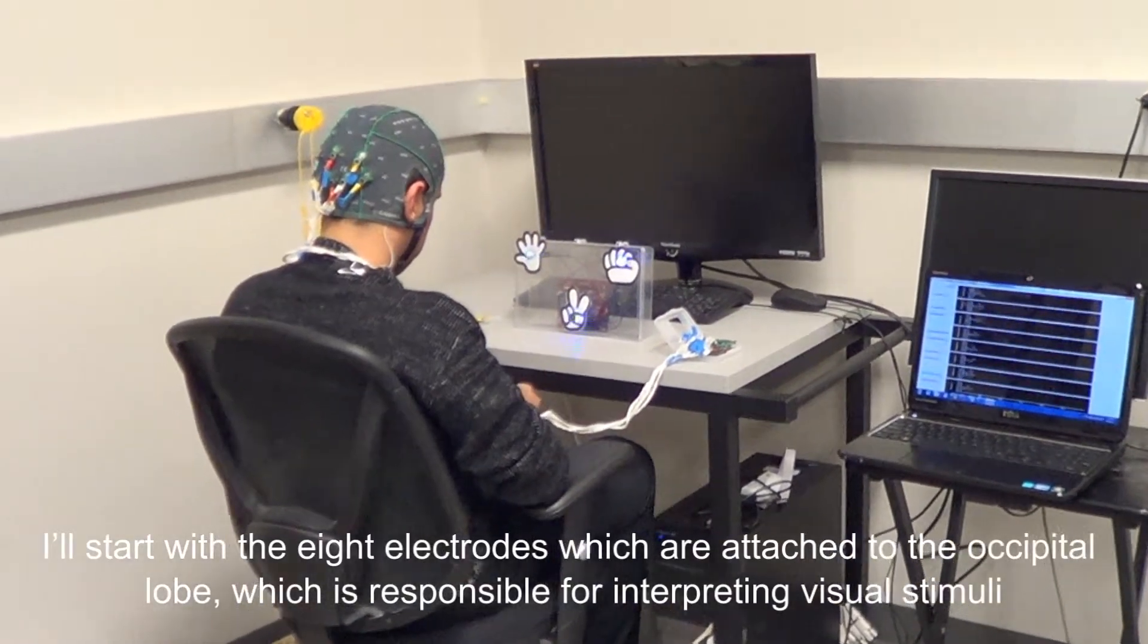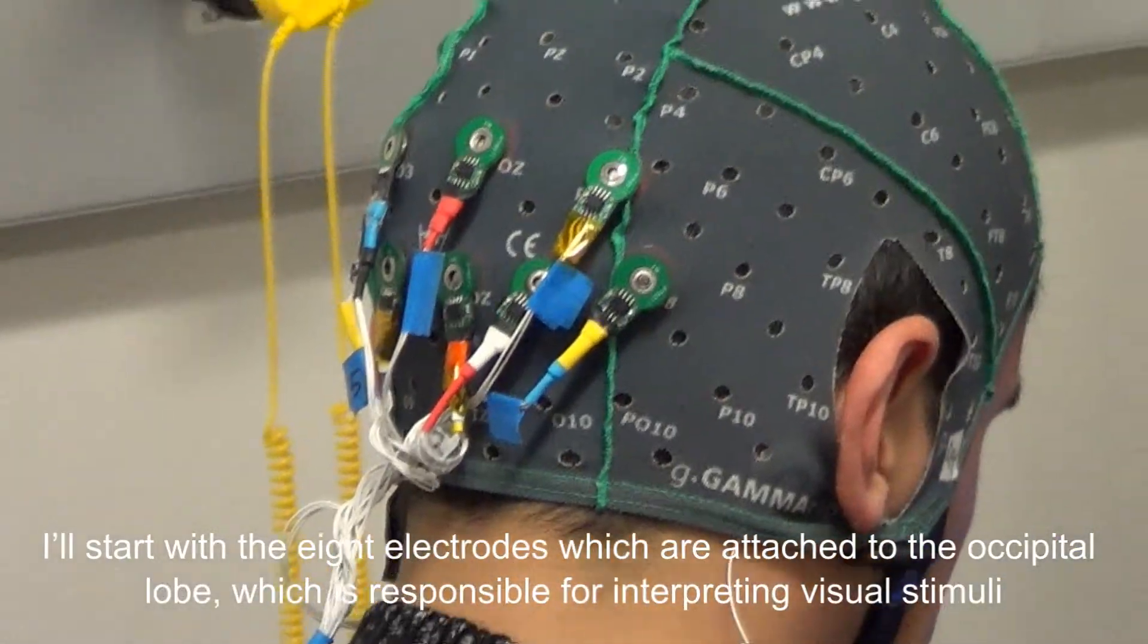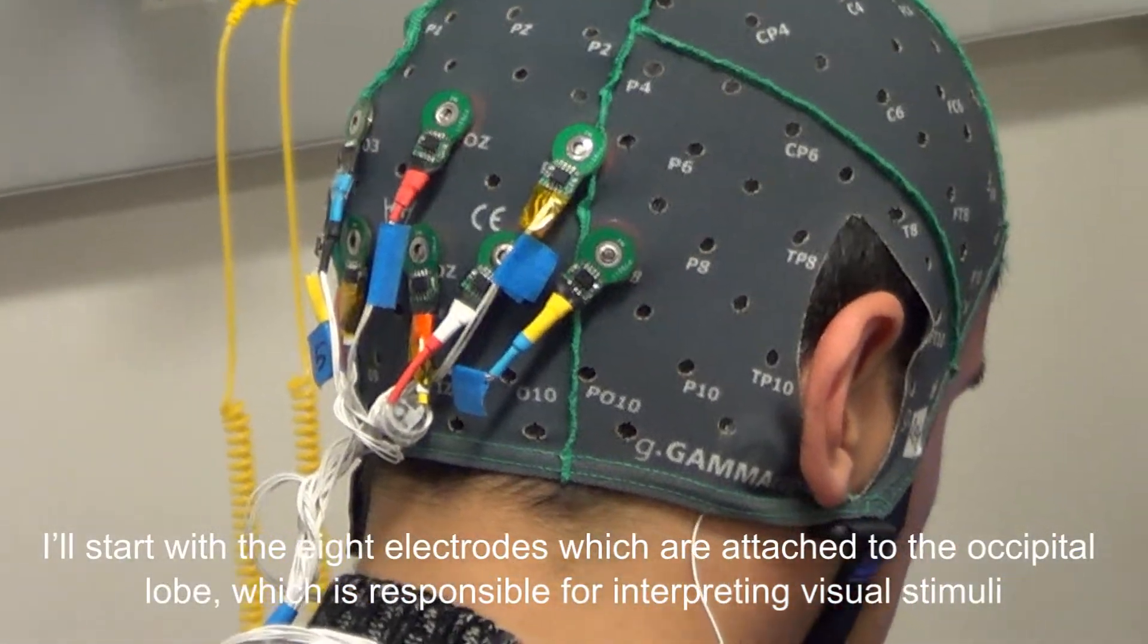I'll start with the eight electrodes which are attached to the occipital lobe, which is responsible for interpreting visual stimuli.